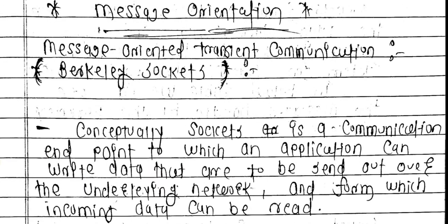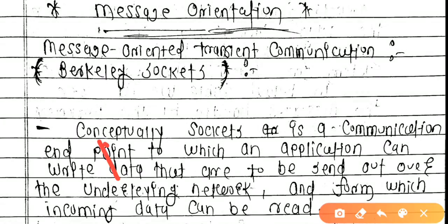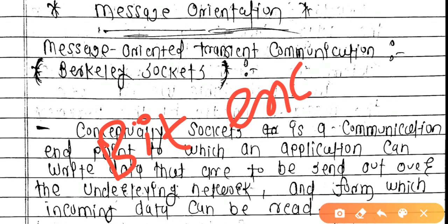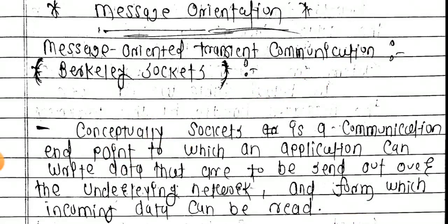Let us understand with an example. RPC means system generated call. In mobile terms, it's like mobile text messages. Now on top of that we have WhatsApp, which is a separate messaging service - a facility to send messages and transfer big data. After the message is delivered, an acknowledgement comes back confirming whether the message was received or not. WhatsApp also provides message security through encryption, which means safety for the communication.